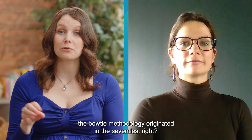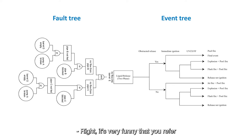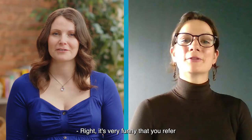If I understand it well, the Bowtie methodology originated in the 70s, right? And it was introduced as a combined product of a fault tree and an event tree. Why would you say that it's still a relevant model for risk management and barrier management?